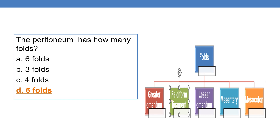Coming to the folds of the peritoneum: the peritoneum has two layers — visceral peritoneum and parietal peritoneum. In addition, the peritoneum has folds. There are mainly five folds of the peritoneum. They are: greater omentum, falciform ligament, lesser omentum, mesentery, and mesocolon. Note that mesocolon is not a part of the colon — it is a fold of the peritoneum.